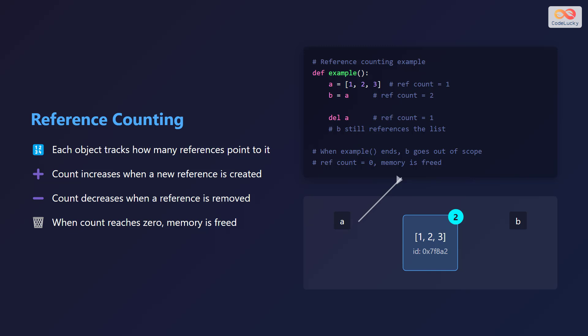Each object in Python keeps track of the number of references pointing to it. This count increases whenever a new reference to the object is created and decreases when a reference is removed. When the reference count drops to zero, meaning no other objects or variables are using it, Python automatically frees the memory occupied by that object.